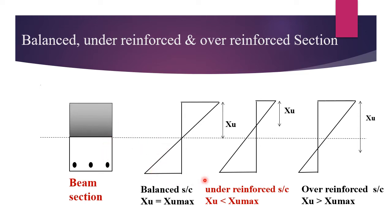First we see a balanced section and these are the three strain diagrams of this beam section. In the balanced section, both the materials reach their permissible stress level at the same time.